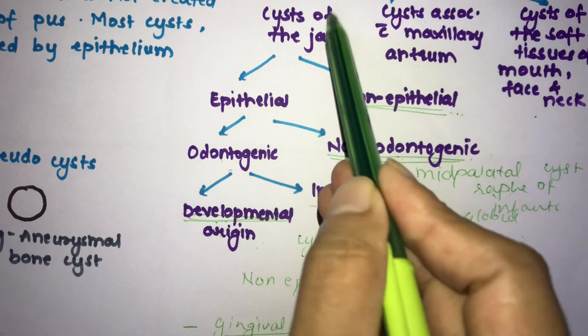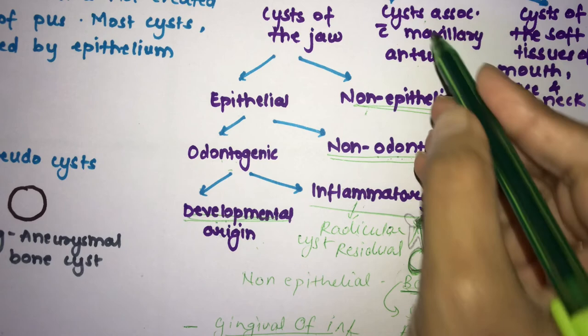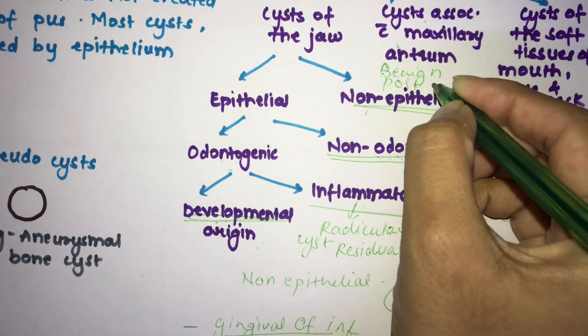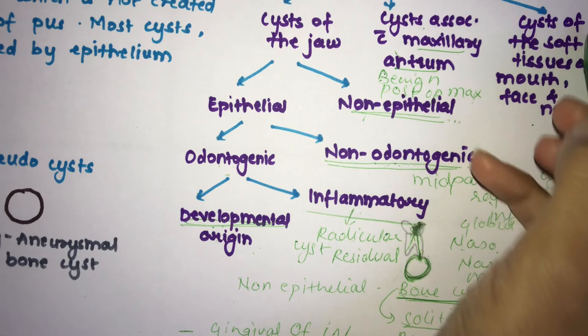This covers all the cysts of the jaws. The examples for cysts associated with the maxillary antrum are the benign mucosal cyst and the post-operative maxillary cyst.